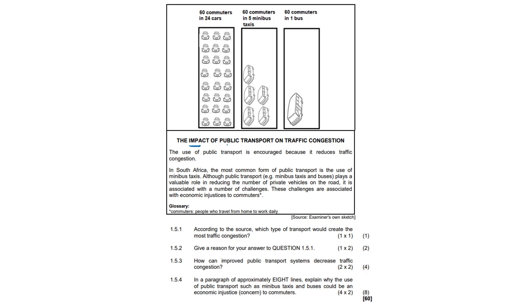The impact of public transport on traffic congestion. The use of public transport is encouraged because it reduces traffic congestion. In South Africa, the most common form of public transport is the use of minibus taxis. We know this all too well. Very dangerous driving vehicles. Although public transport, example minibus taxis and buses, play a valuable role in reducing the number of private vehicles on the road, it is associated with a number of challenges. These challenges are associated with economic injustice to commuters.